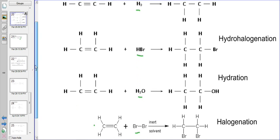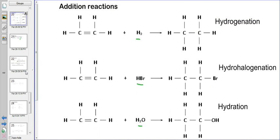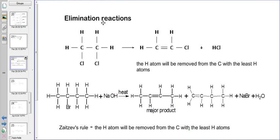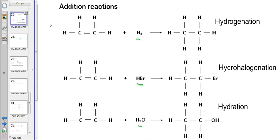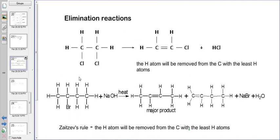We see that elimination reactions are the opposite of addition reactions. It is also important to note that elimination reactions take place with alkanes — alkanes undergo elimination reactions where the single bond is replaced by a double bond. Whereas in addition reactions, alkenes become alkanes, so the double bond becomes a single bond. And the single bond becomes a double bond in elimination reactions.